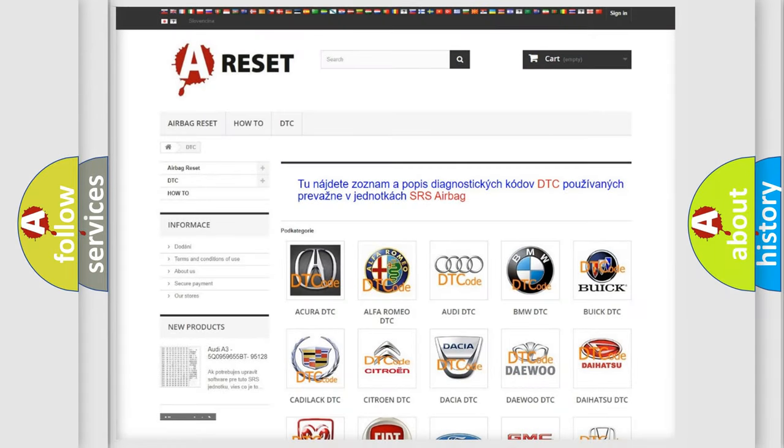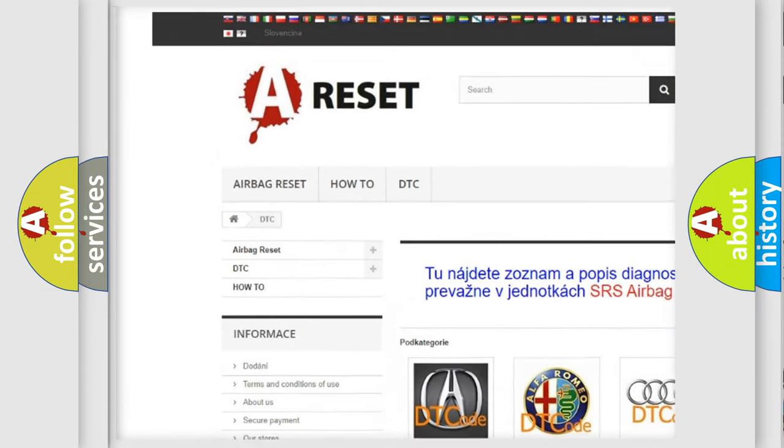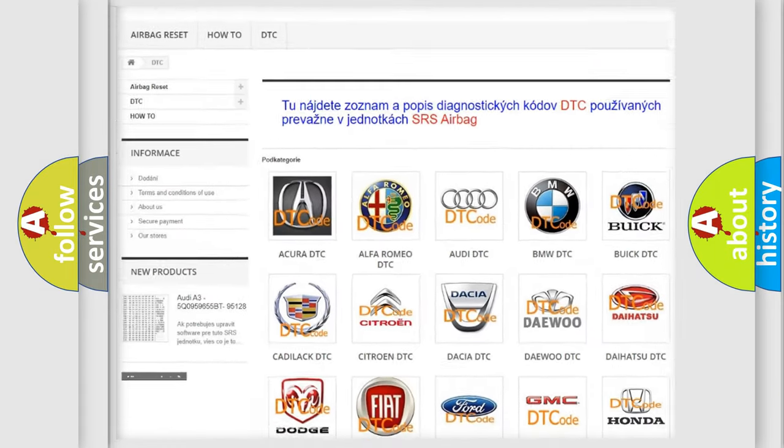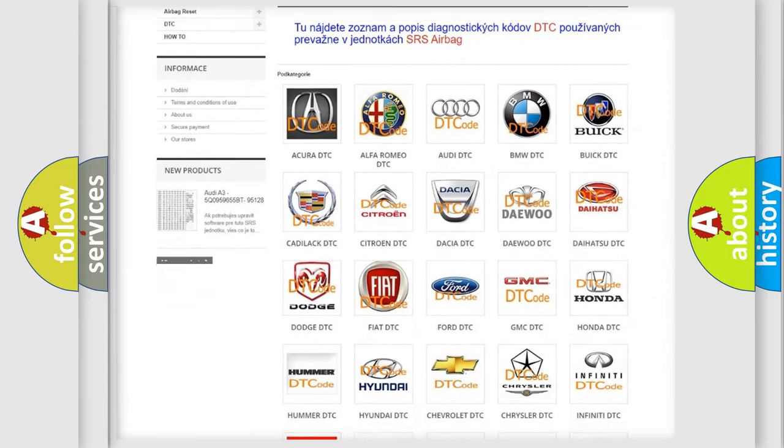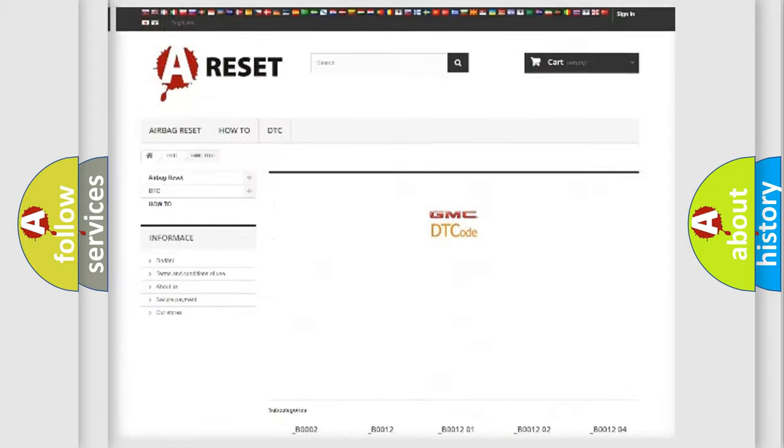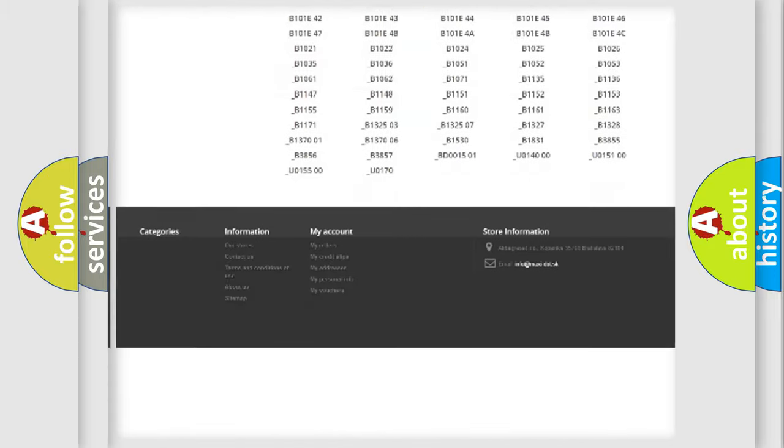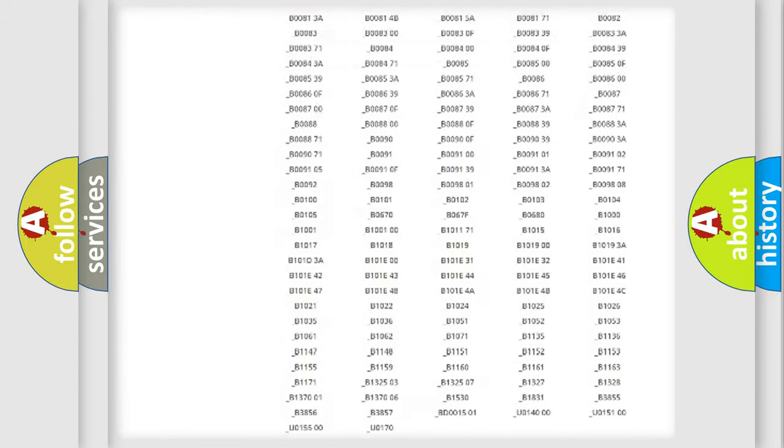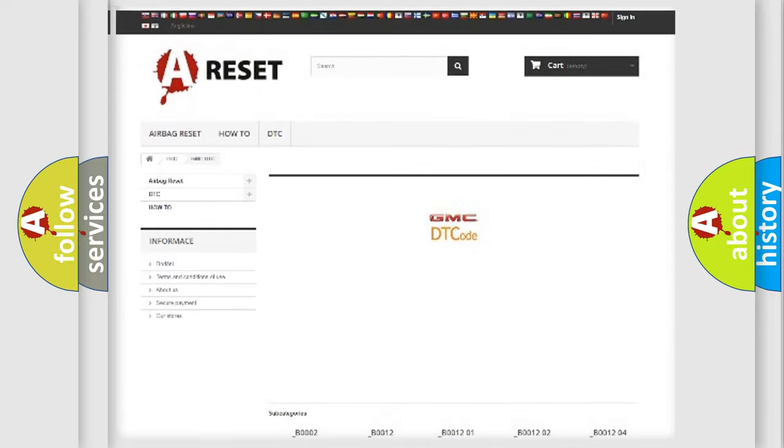Our website airbagreset.sk produces useful videos for you. You do not have to study the OBD2 protocol anymore to know how to troubleshoot any car breakdown. You will find all the diagnostic codes that can be diagnosed in GMC vehicles.